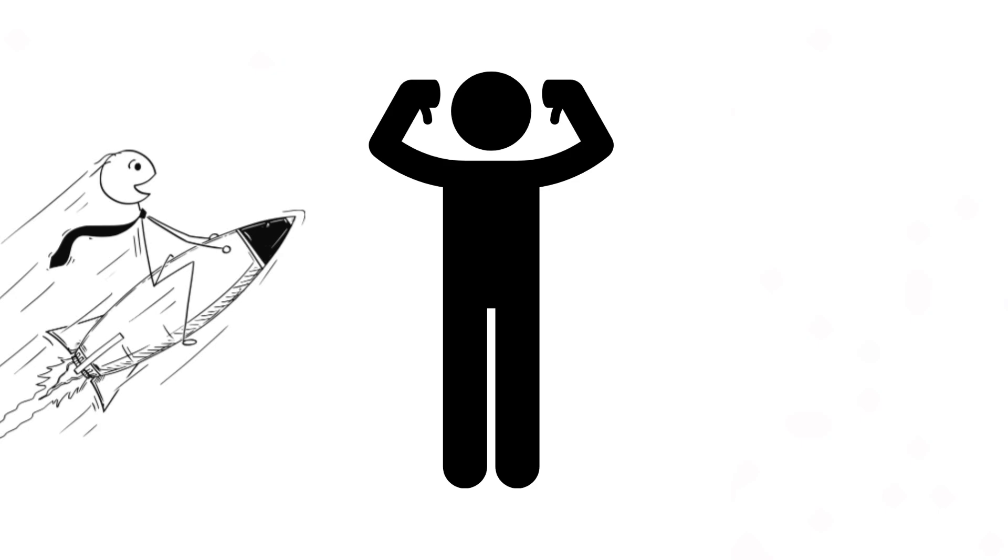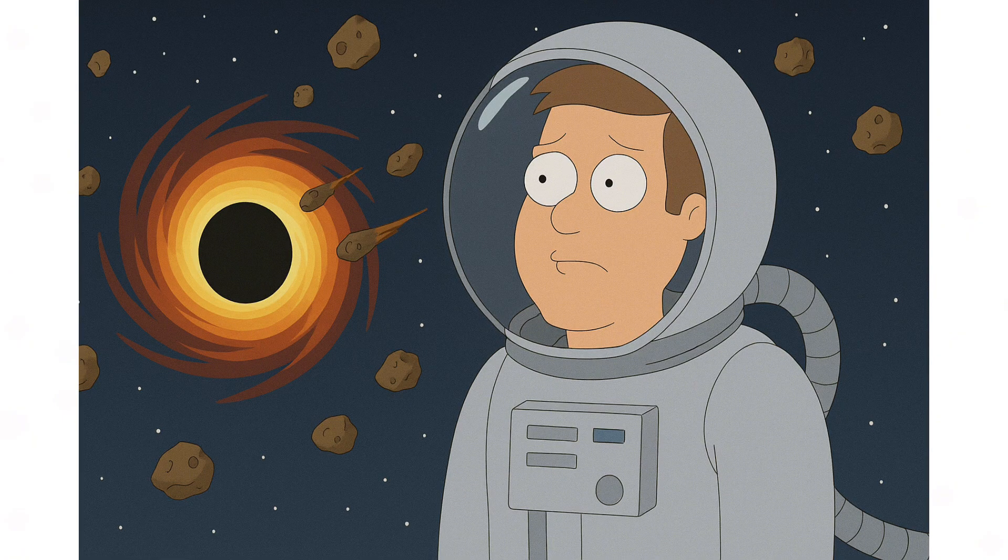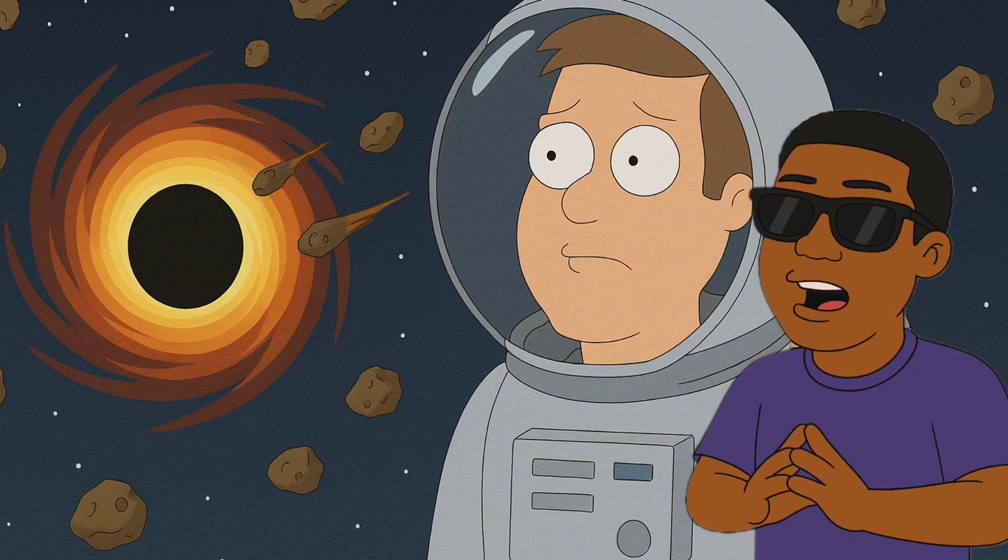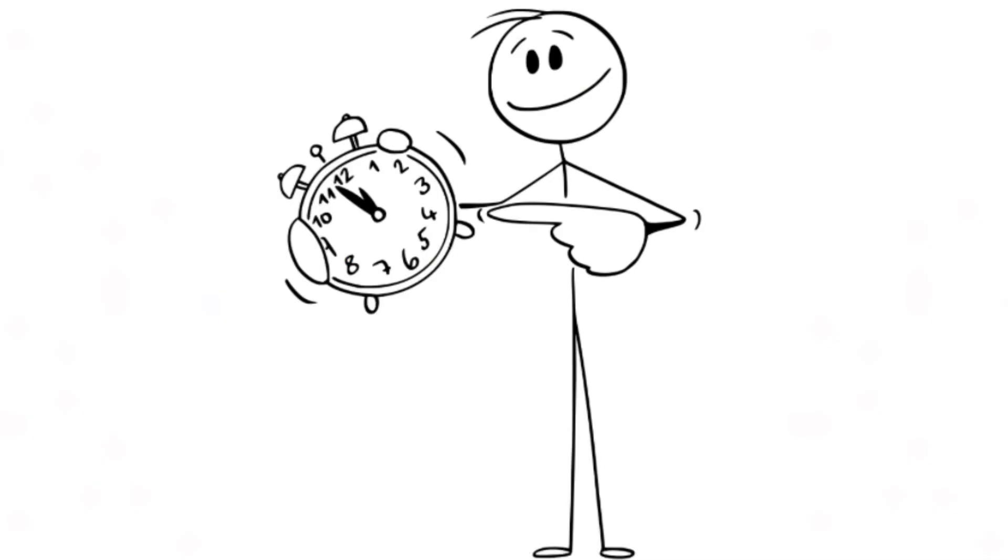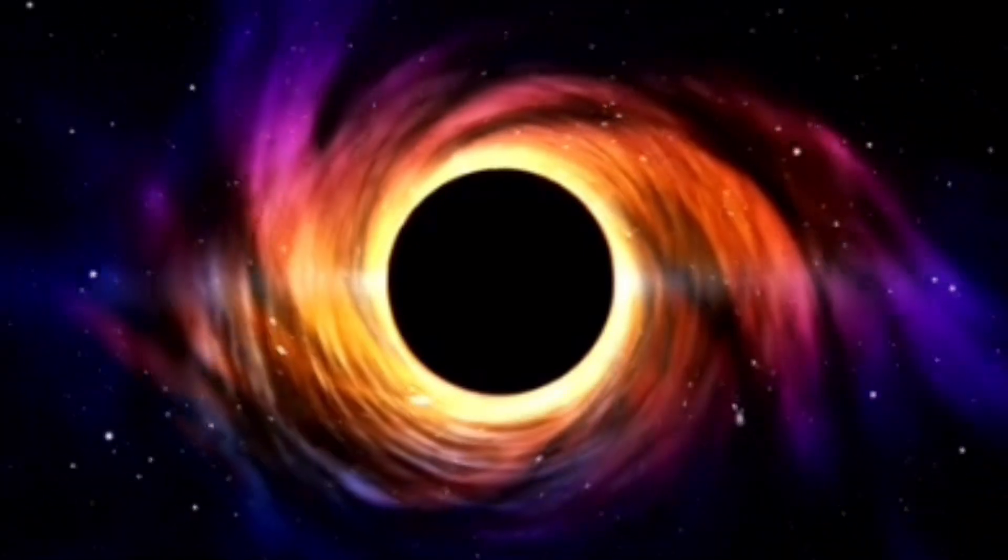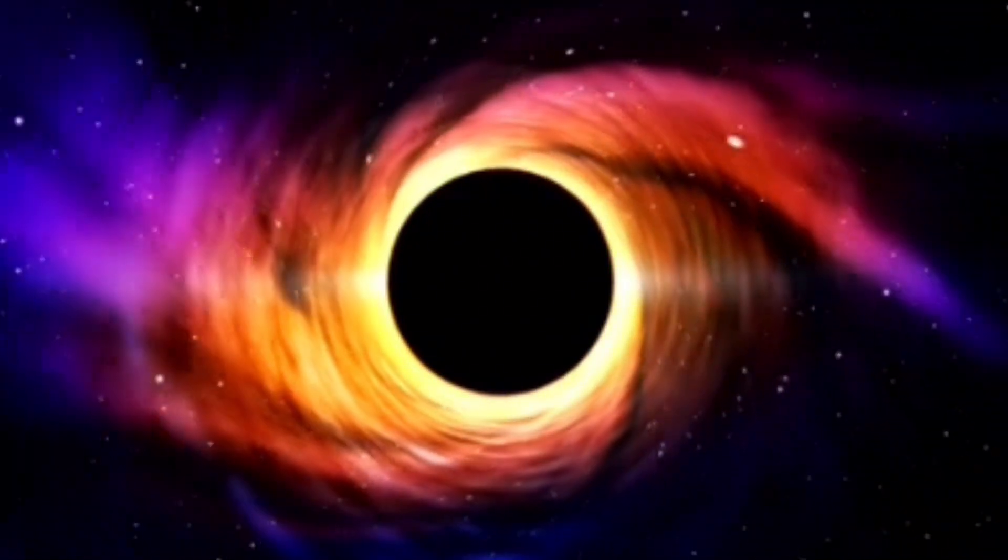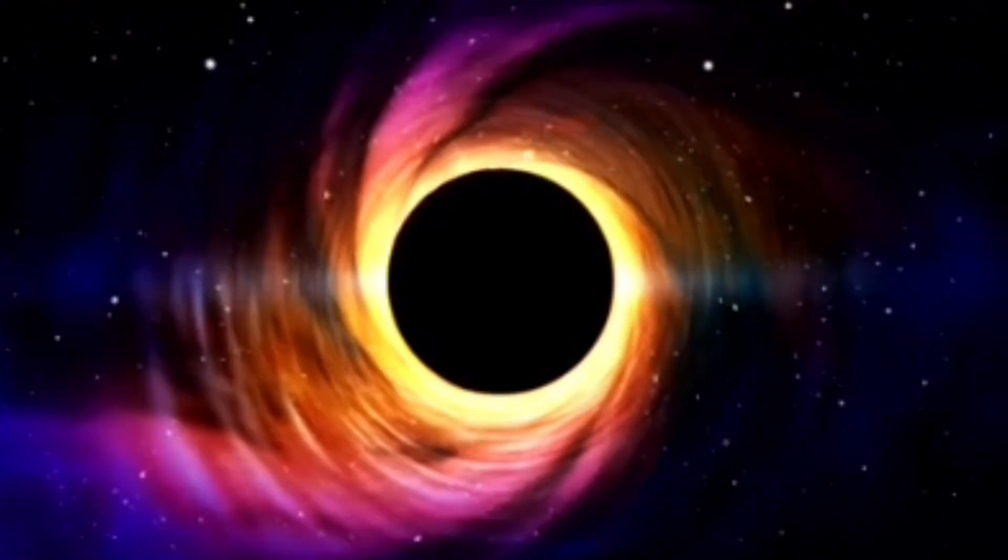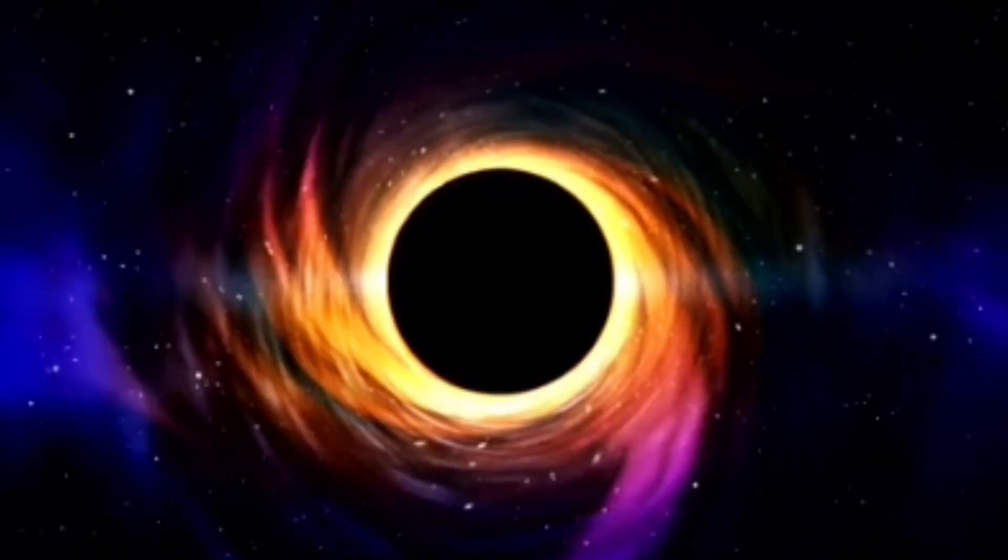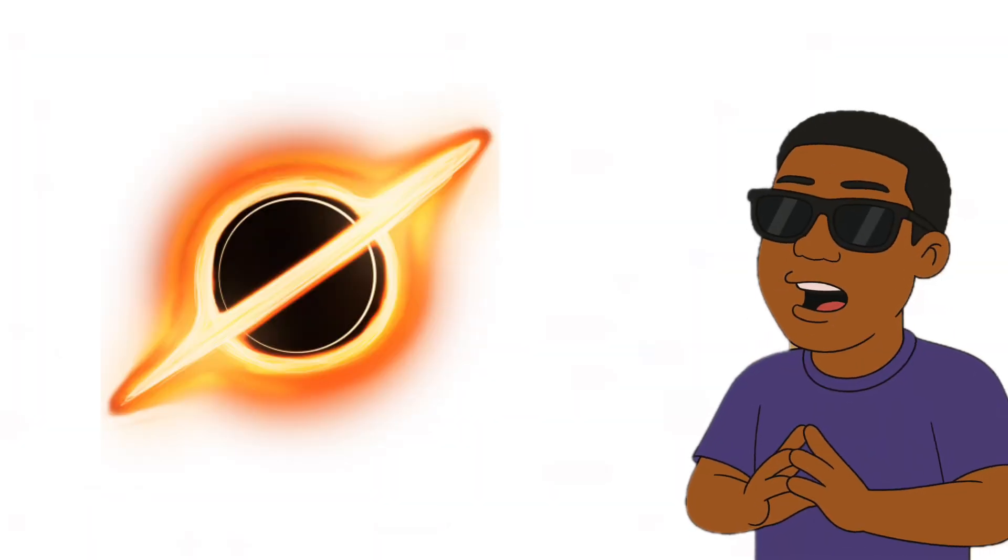Now here's the weird bit. To the outside observer, stuff falling into a black hole seems to slow down and stretch like cosmic spaghetti, never quite crossing the event horizon. To the unlucky object itself, it's just falling normally until it gets crushed into oblivion. Time and space don't play by normal rules here. They bend, warp, and twist under the black hole's insane gravity. Black holes aren't just cosmic vacuum cleaners though. They can power some of the brightest things in the universe. As matter swirls into them, it heats up and releases staggering amounts of energy, sometimes blasting out radiation and jets of particles that outshine entire galaxies. So ironically, the darkest objects in the universe can also create the brightest shows.